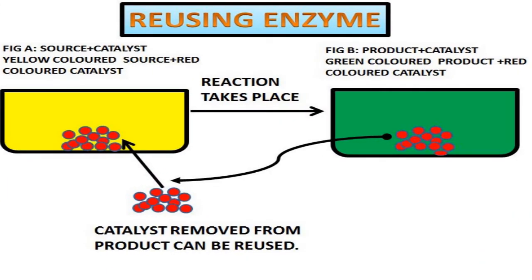In figure A, the solution color is yellow, representing the source, and in figure B, the color is green, representing the product. The red dots in the vessel are the catalyst. You can find the catalyst present in both figure A and figure B — meaning the catalyst remains unchanged. So you can take out that catalyst, add it again to a new source in the next cycle, and it will again convert source to product. By doing this repeatedly, you are using the same enzyme again and again, so you don't need to invest money in making or buying new enzyme.